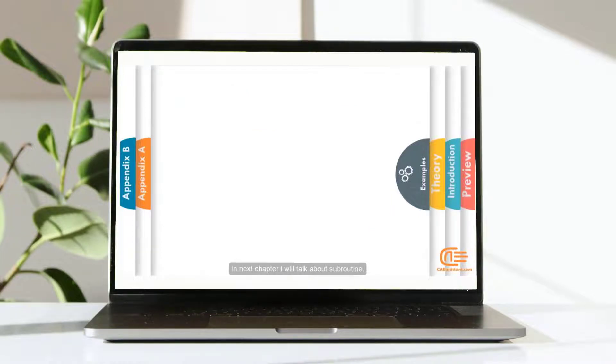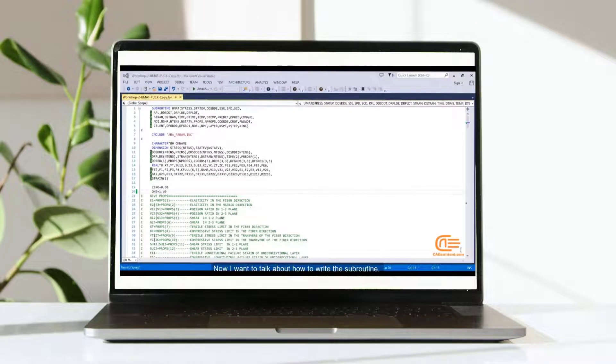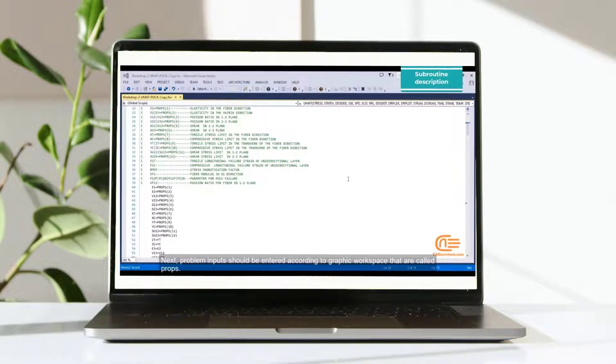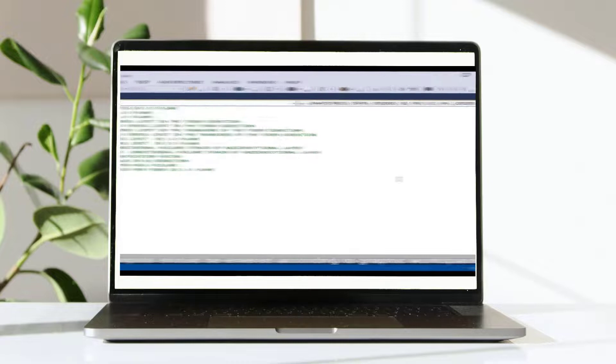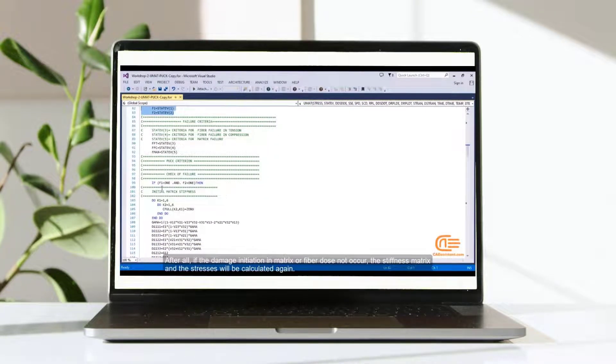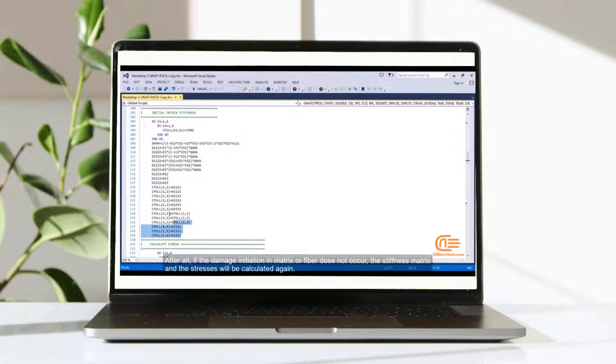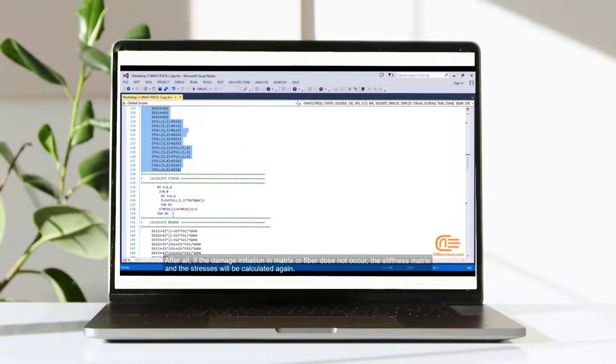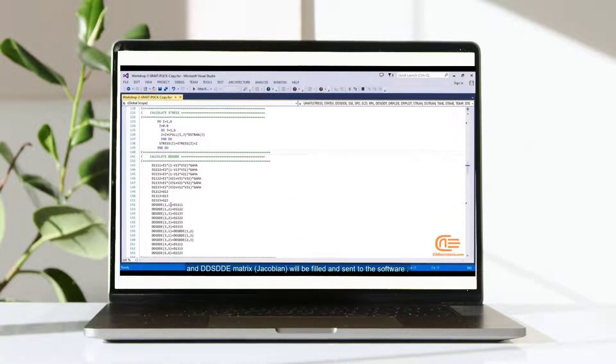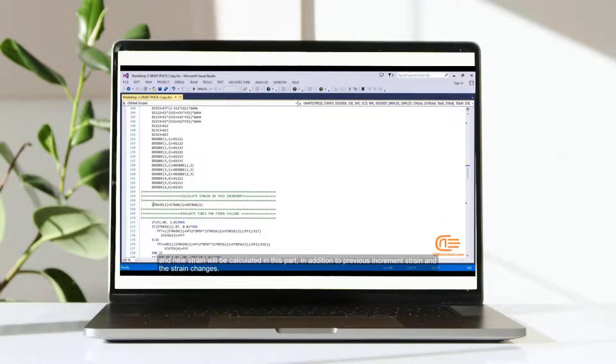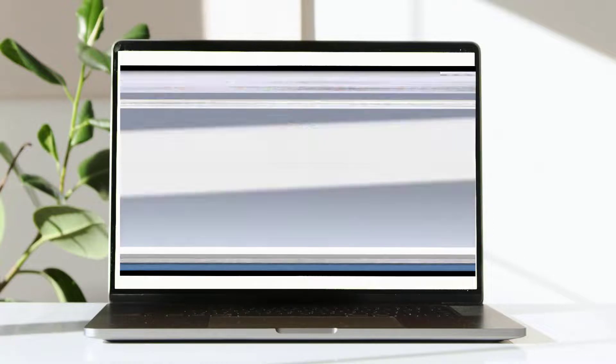In next chapter, I will talk about subroutine. Now I want to talk about how to write the subroutine. In first part, we should define the parameters. Next, problem inputs should be entered according to graphic workspace that are called props. After all, if the damage initiation in matrix or fiber doesn't occur, the stiffness matrix and the stresses will be calculated again. And DDSDDE matrix or Jacobian will be filled and sent to software. A new strain will be calculated in this part in addition to previous increment strain and the strain changes.